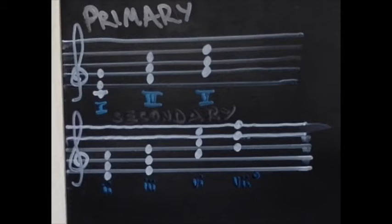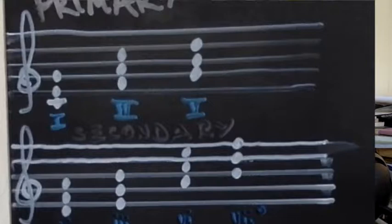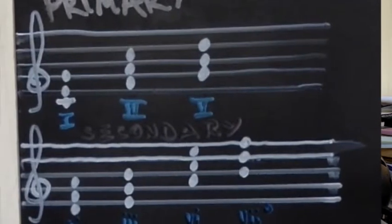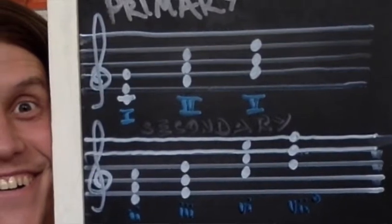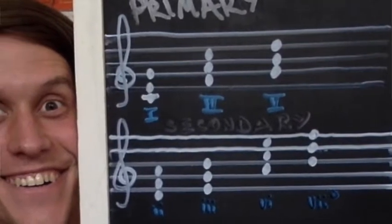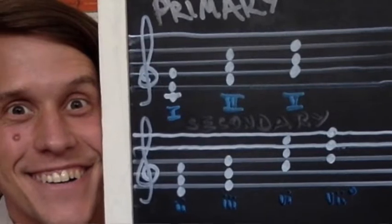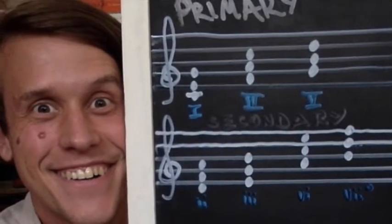In a major key, the primary triads are chord one (tonic), chord four (subdominant), and chord five (dominant). Lots of our very basic musical building blocks work off the relationships between those chords. We then think of the remaining chords as secondary triads — in a major key those are easy to spot because they're just the minor triads: chord two, chord three, and chord six, with a further one for the diminished triad as well.